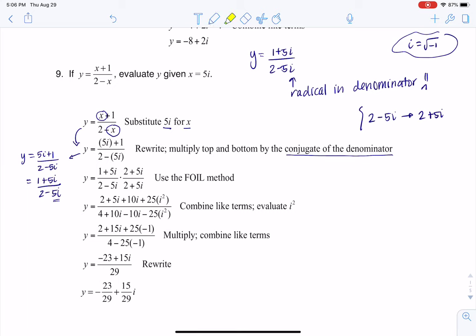So how conjugates work is if you have a minus sign on your original binomial, then the conjugate would be that same binomial just with a plus sign, and vice versa. The conjugate to 2 plus 5i is 2 minus 5i. So that's why you see me multiplying by 2 plus 5i on the numerator and denominator.